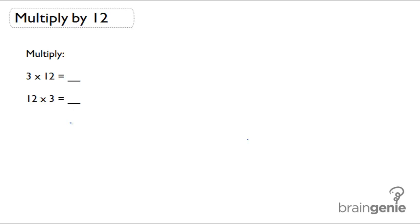So what that means is when you multiply something by 12, you're adding that thing 12 times. So I could write 3 plus 3 plus 3 all the way until I get 12 threes. And when I add that together, I'm actually going to get the answer as 36.